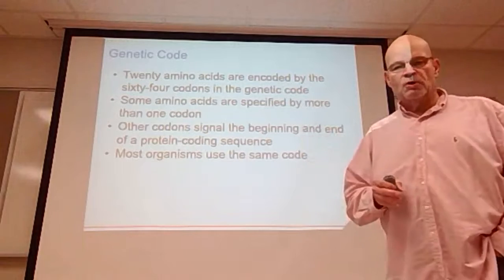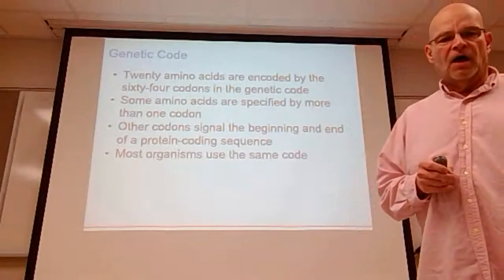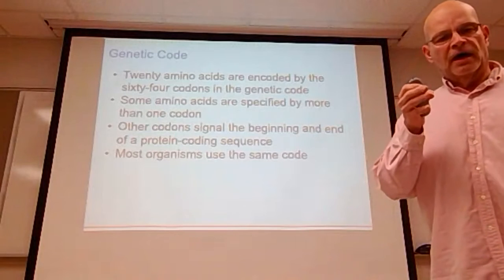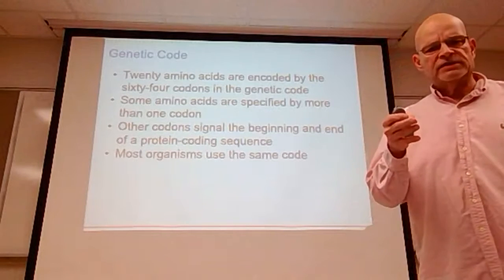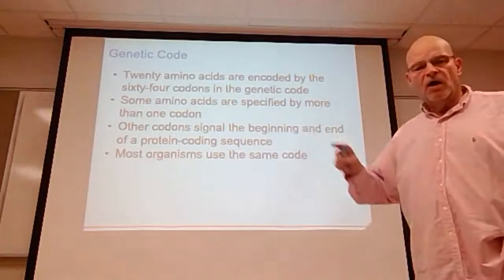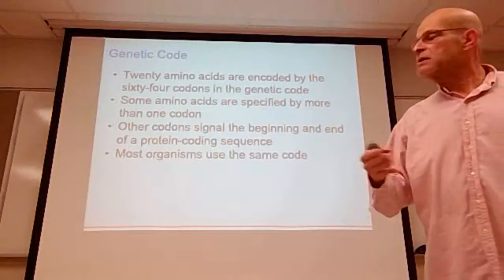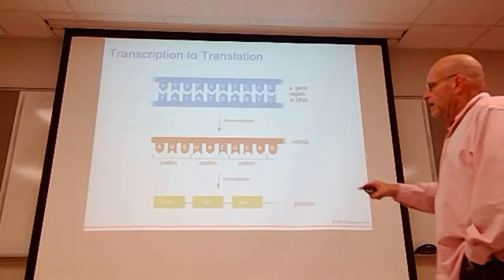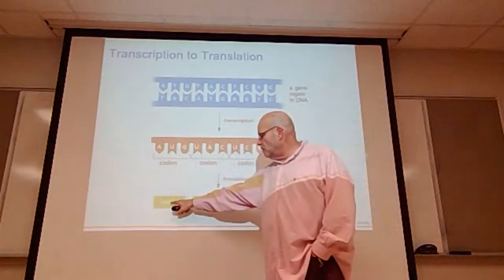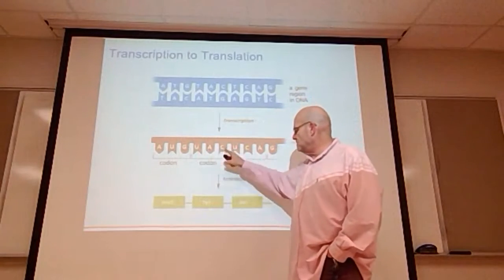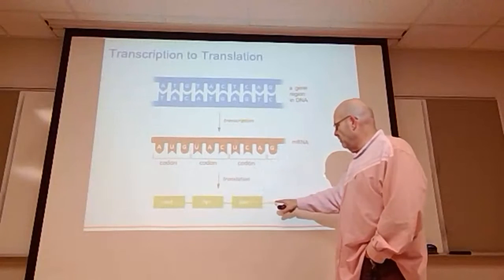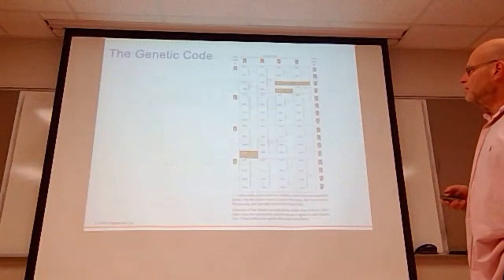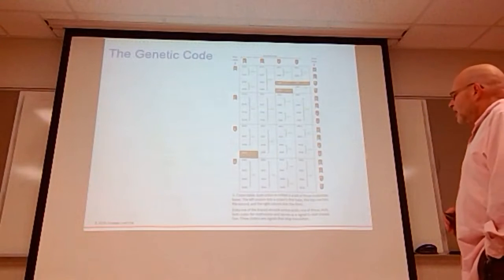Most organisms use the same genetic code. All life on this planet uses the same combination — RNA viruses are not considered living so they are the exception. AUG is the start codon and codes for methionine; subsequent codons like UAC build the growing protein using these three-letter codes called codons.